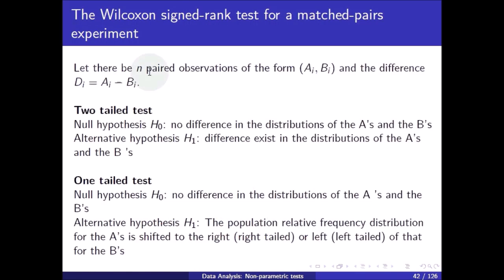Let there be n paired observations of the form a_i and b_i, and the difference d_i is equal to a_i minus b_i. For a two-tailed test, the null hypothesis is no difference in the distribution of As and Bs, and the alternative hypothesis is that a difference exists in the distribution of the As and the Bs.